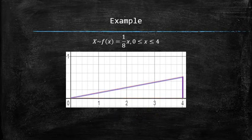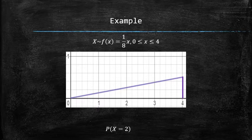Let's find the probability of x being equal to 2. As we previously discussed, the probability of a continuous random variable being equal to a single value is equal to 0.